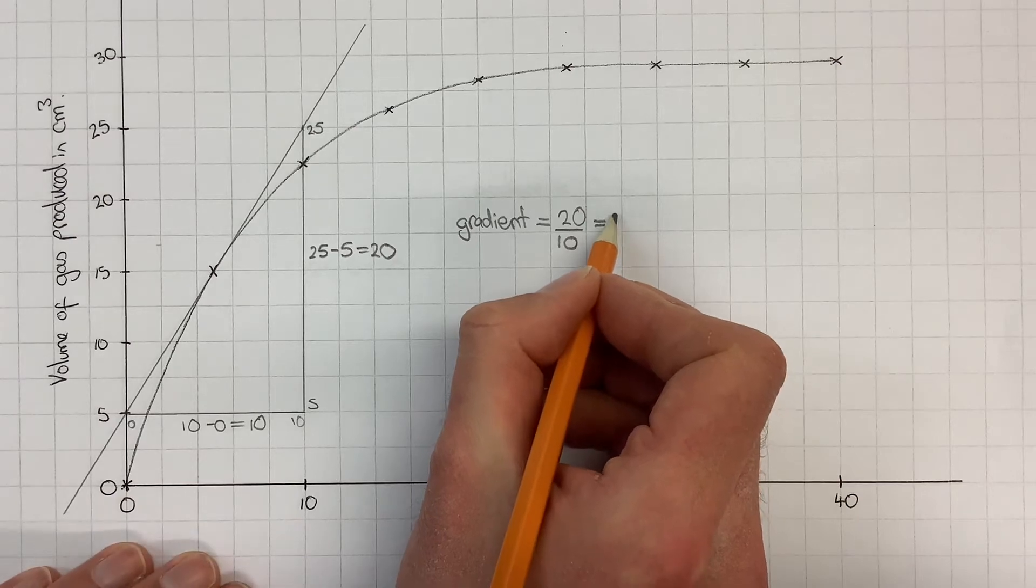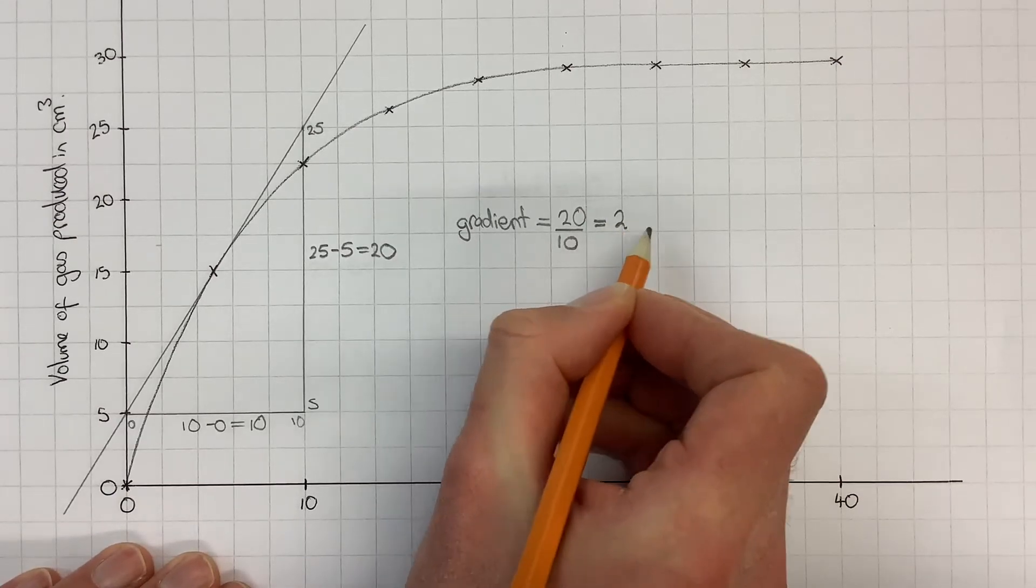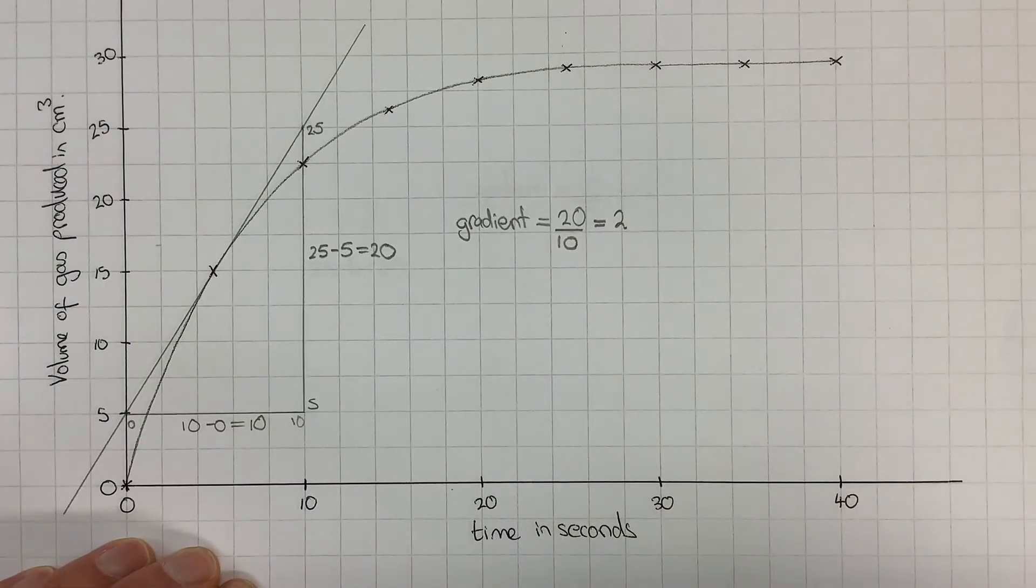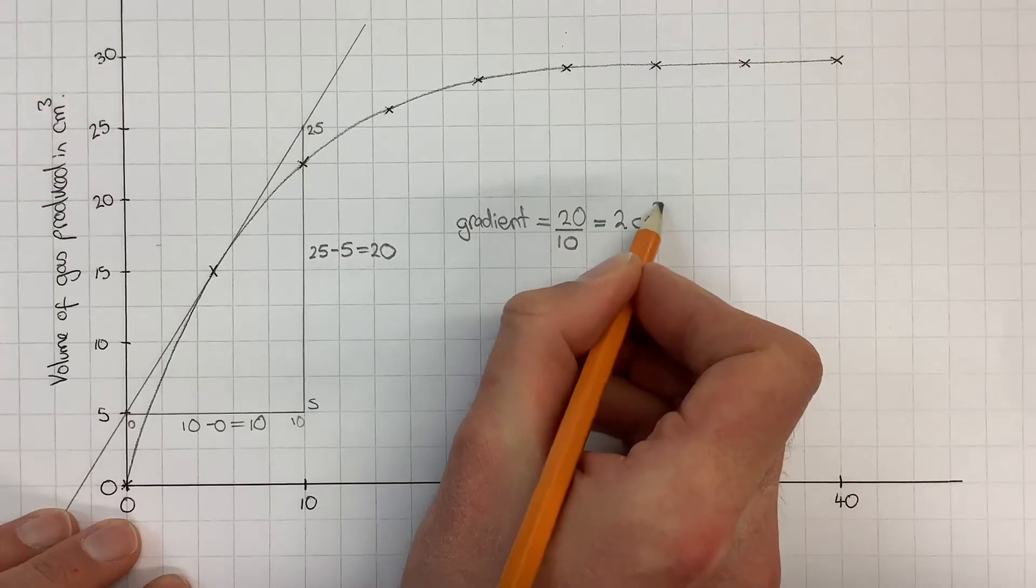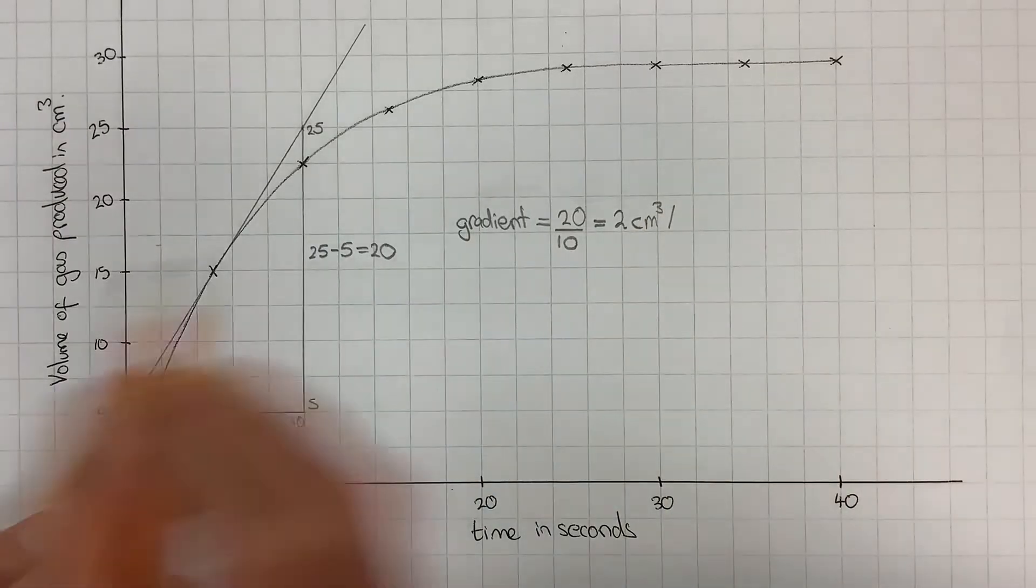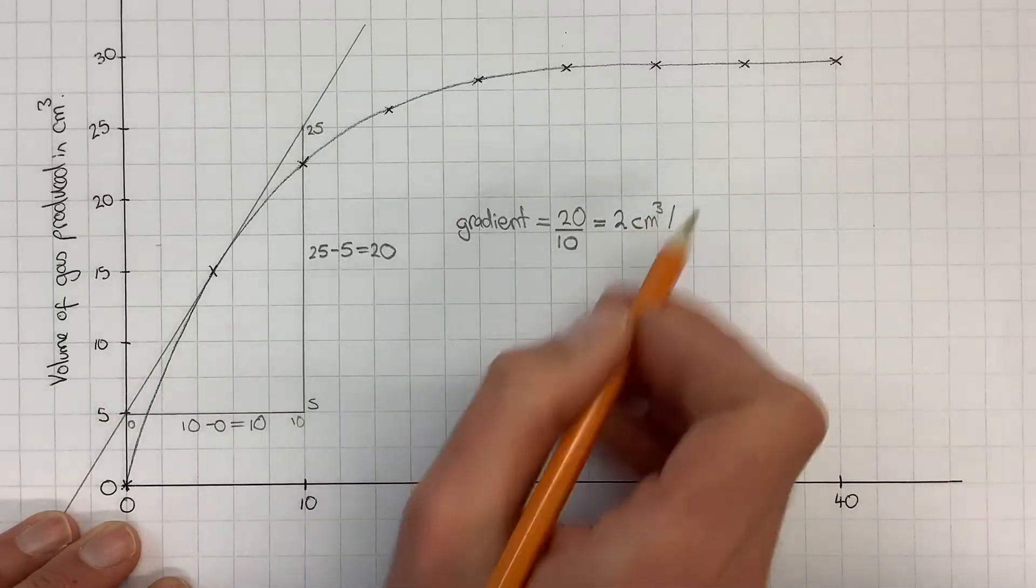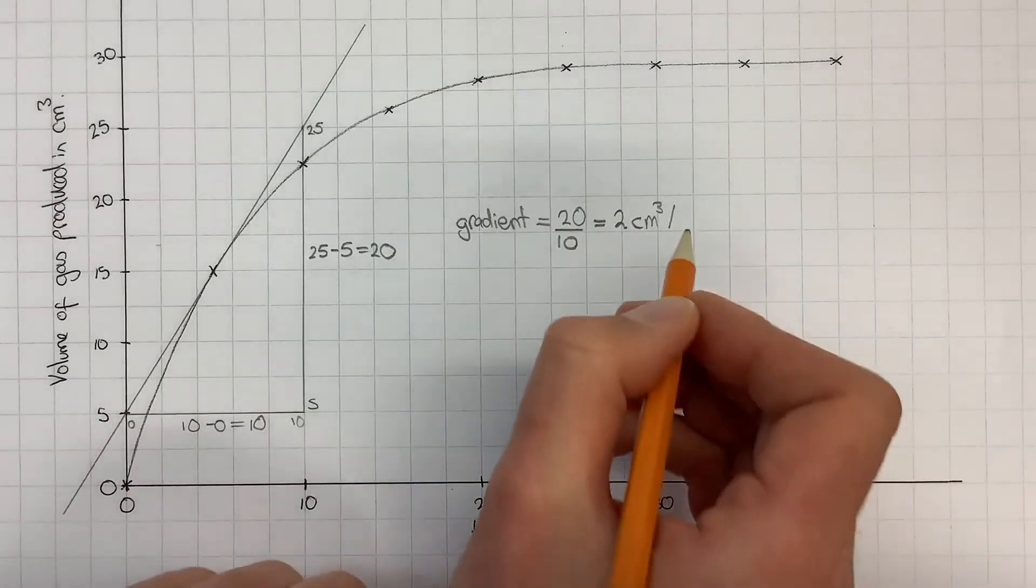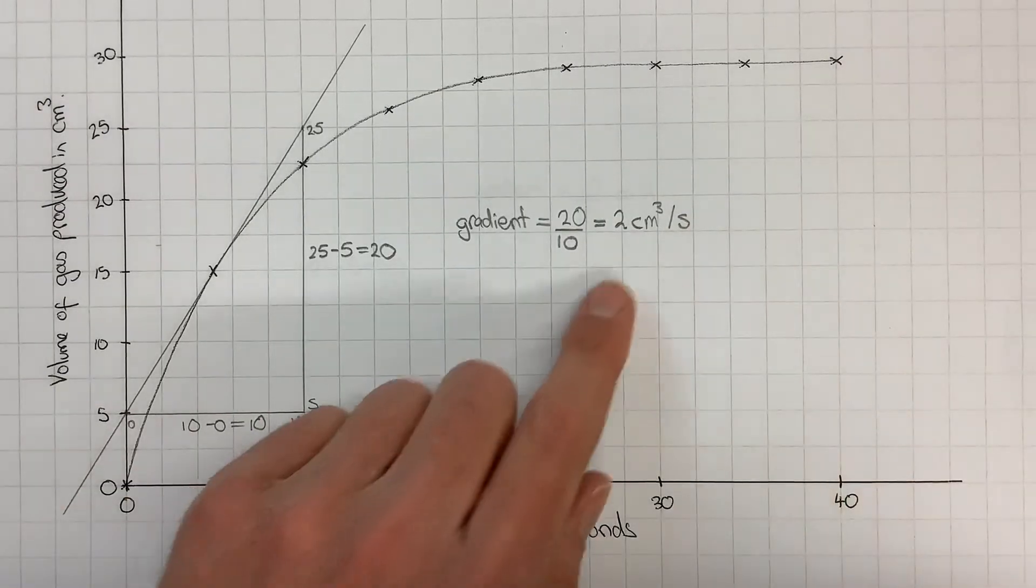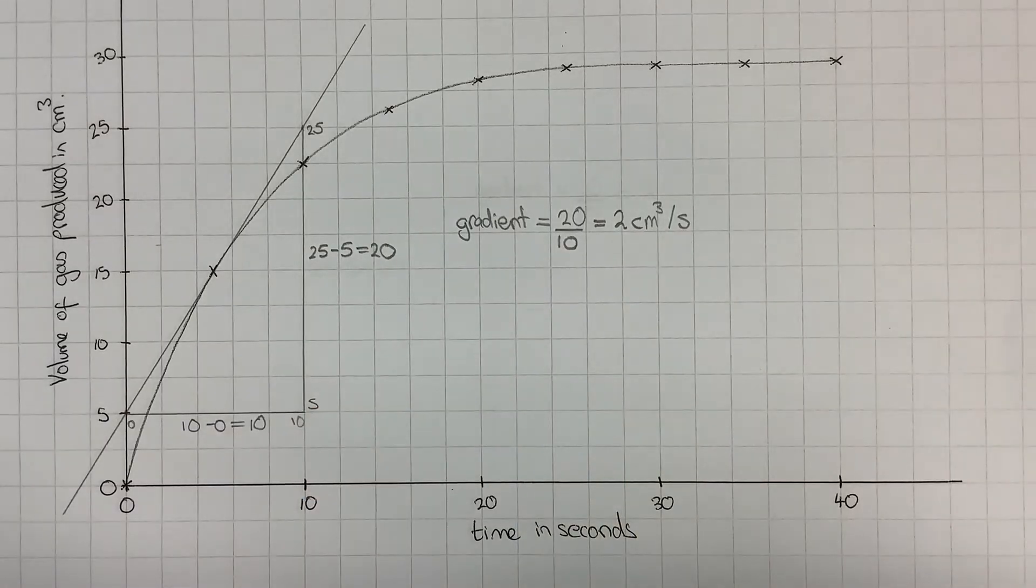I don't need a calculator for this one because it's fairly obviously 2, but what I do need to do still is the units. That will be whatever is on the vertical, centimeters cubed, divided by the time, which was in seconds. So that would give me centimeters cubed per second.